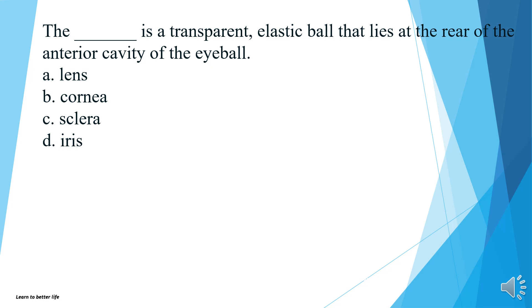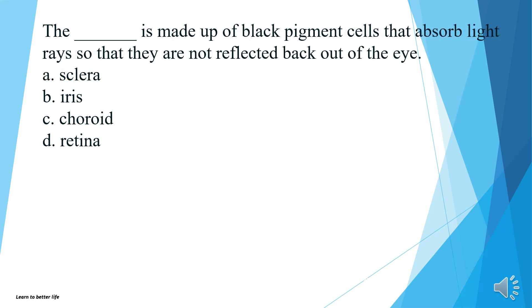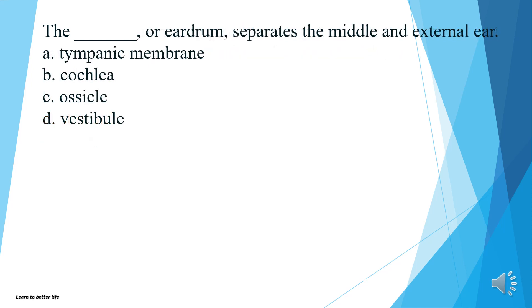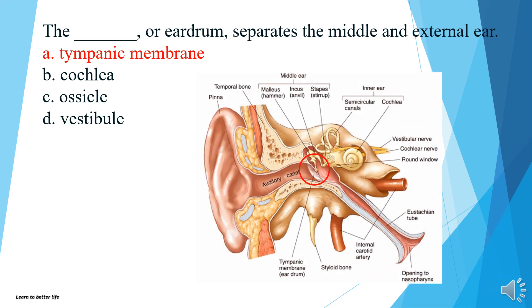What is a transparent, elastic ball that lies at the rear of the anterior cavity of the eyeball? Lens, cornea, sclera, or iris? The answer is A, lens. What is made up of black pigment cells that absorb light rays so that they are not reflected back out of the eye? Sclera, iris, choroid, or retina? The answer is C, choroid. The tympanic membrane, or eardrum, separates the middle and external ear? Tympanic membrane, cochlea, ossicles, or vestibule? The answer is A, tympanic membrane.